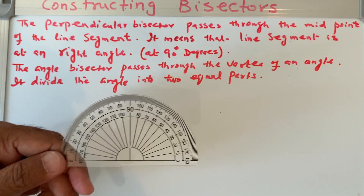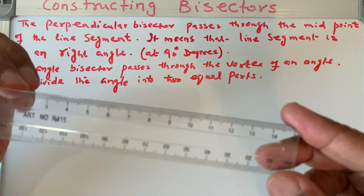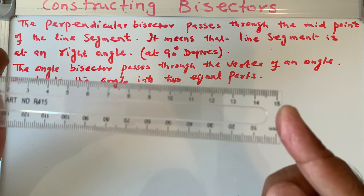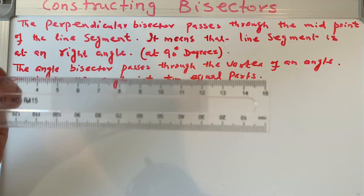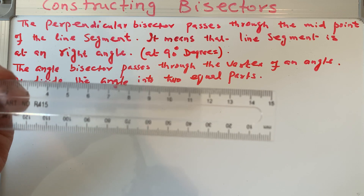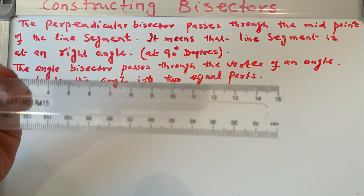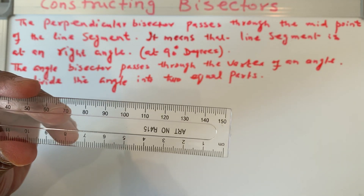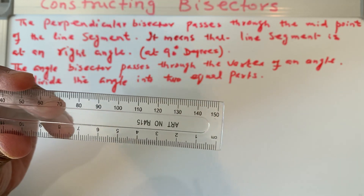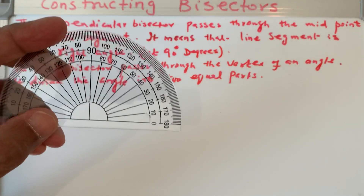A line segment is always drawn with the ruler. This is a ruler where we can see one centimeter, two centimeters, three centimeters, four centimeters, and so on. Each centimeter is further divided into smaller units, which are millimeters — one smaller unit is one millimeter. So we have 10 mm, 20 mm, 30 mm, 40 mm, 50 mm, 60 mm, 70 mm, and so on. We can draw a line segment with the ruler and any angle with the protractor.